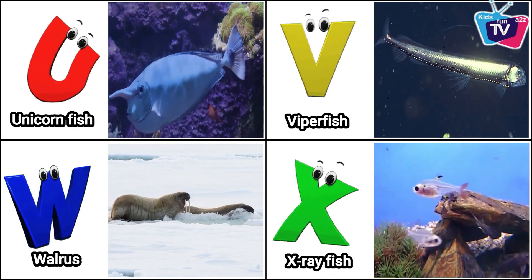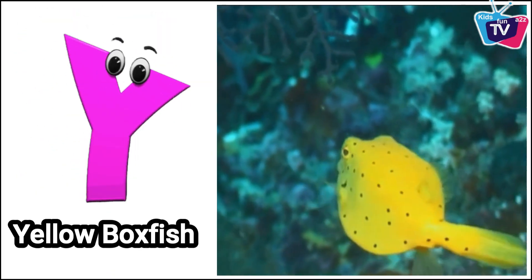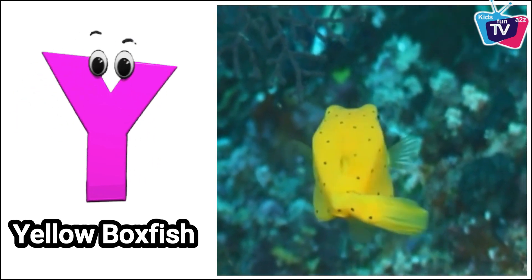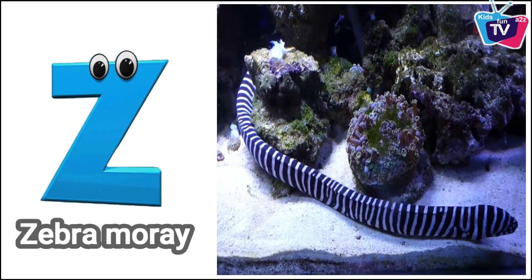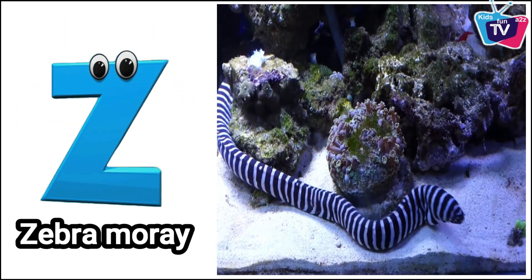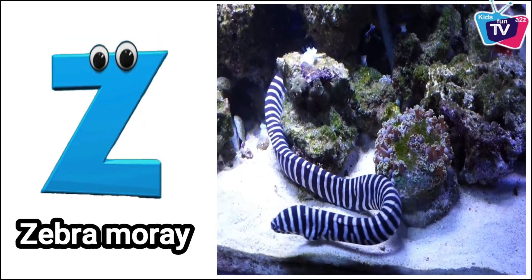Y is for yellow box fish. Z is for zebra moray.